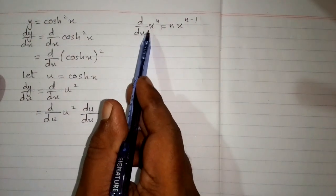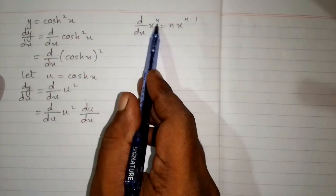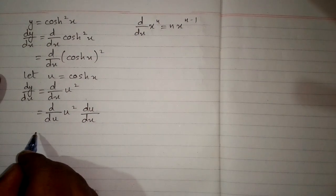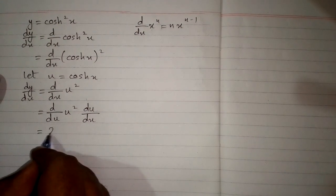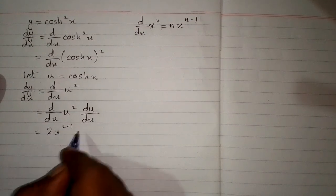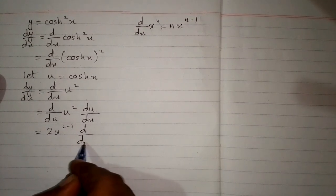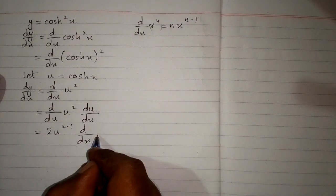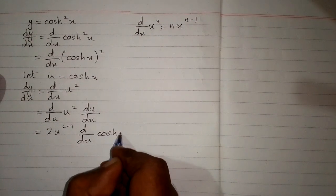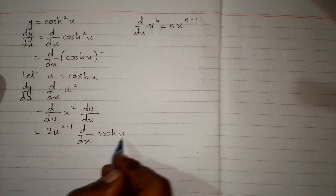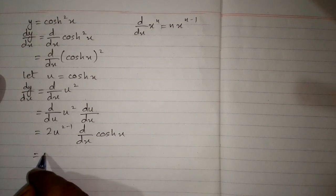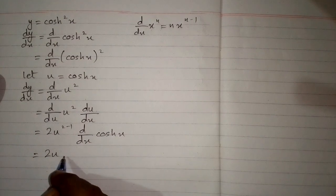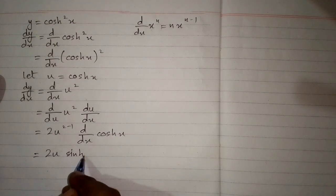Now we can apply this formula. We have 2 in place of n, so we will write 2 times u to the power 2 minus 1 and multiply by the derivative of u. And u is hyperbolic cosine of x, so we will write hyperbolic cosine of x.